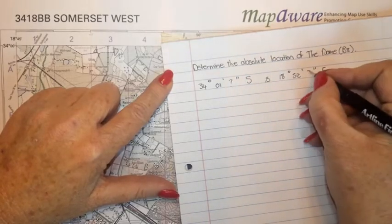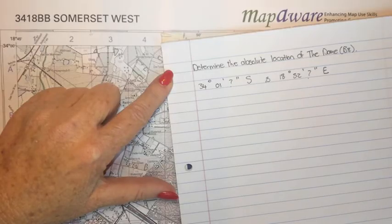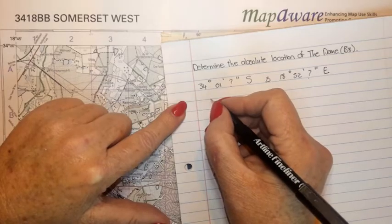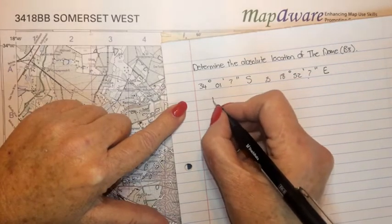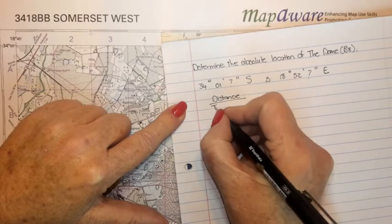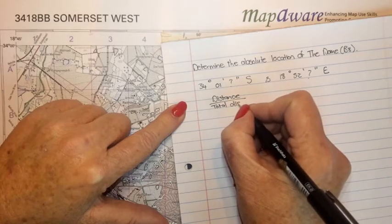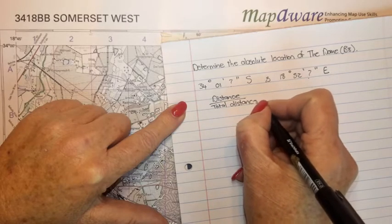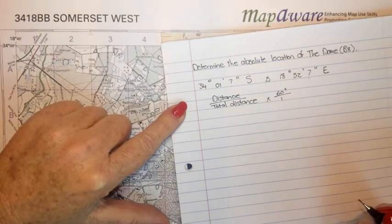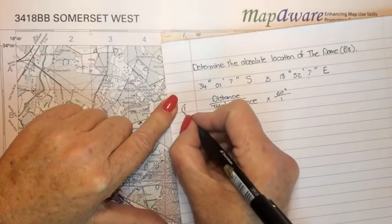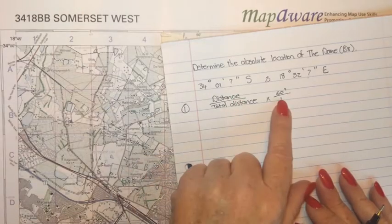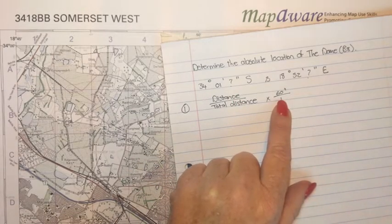The only calculation we need to do is to determine the seconds. The formula is: distance over total distance, multiplied by 60 seconds over 1. This is the first method — there are two methods to calculate absolute location. Distance over total distance multiplied by 60 seconds over 1. We're going to take the distance from the reference line of longitude, measure it, and put it over the total distance between two consecutive lines of latitude.